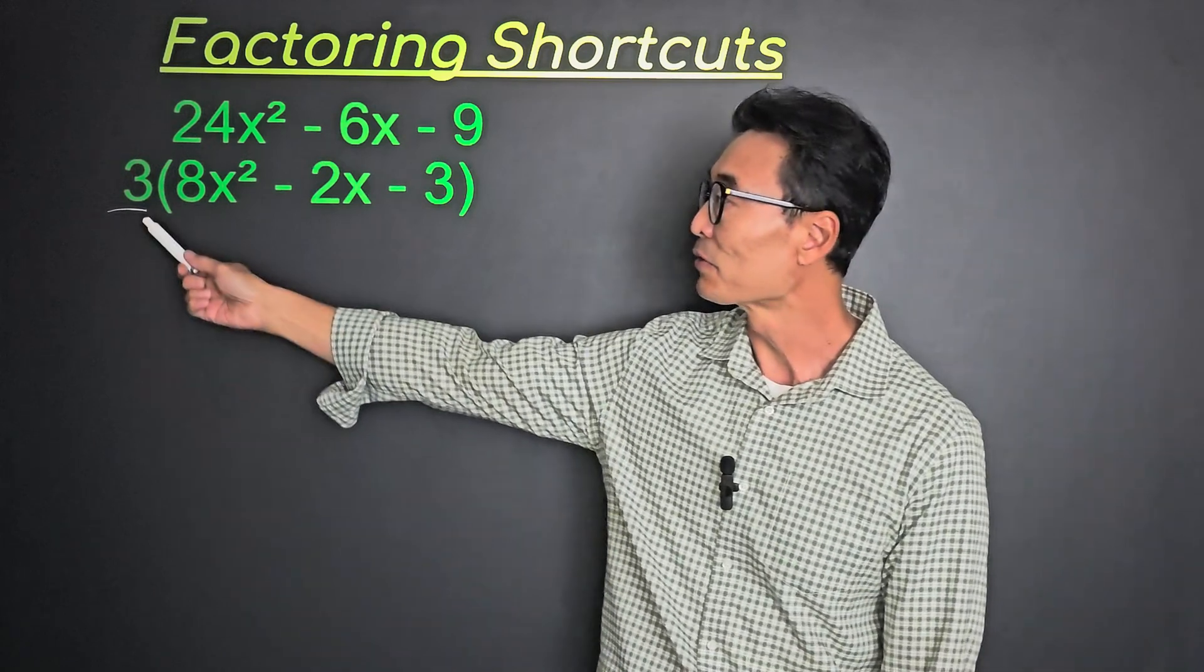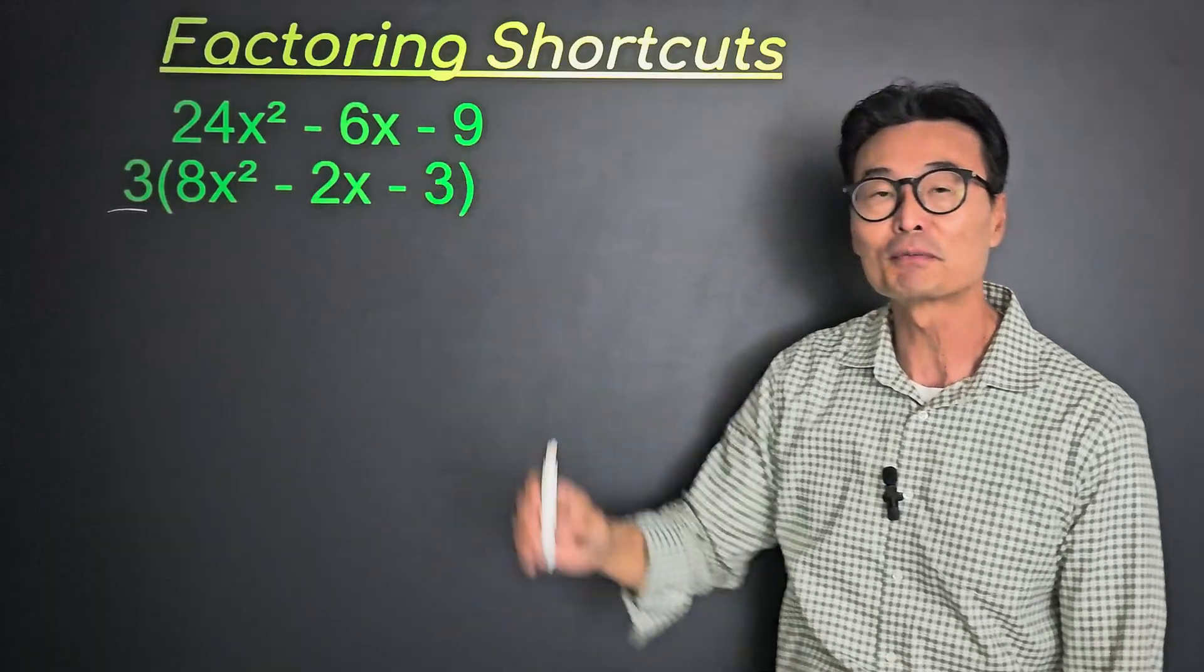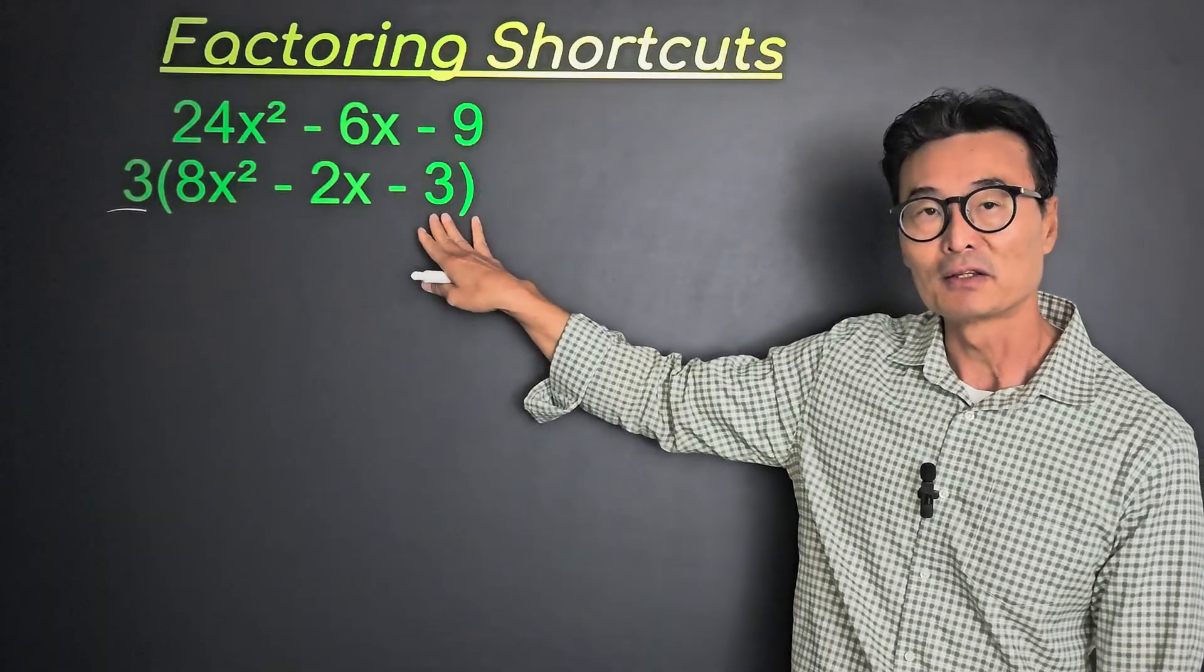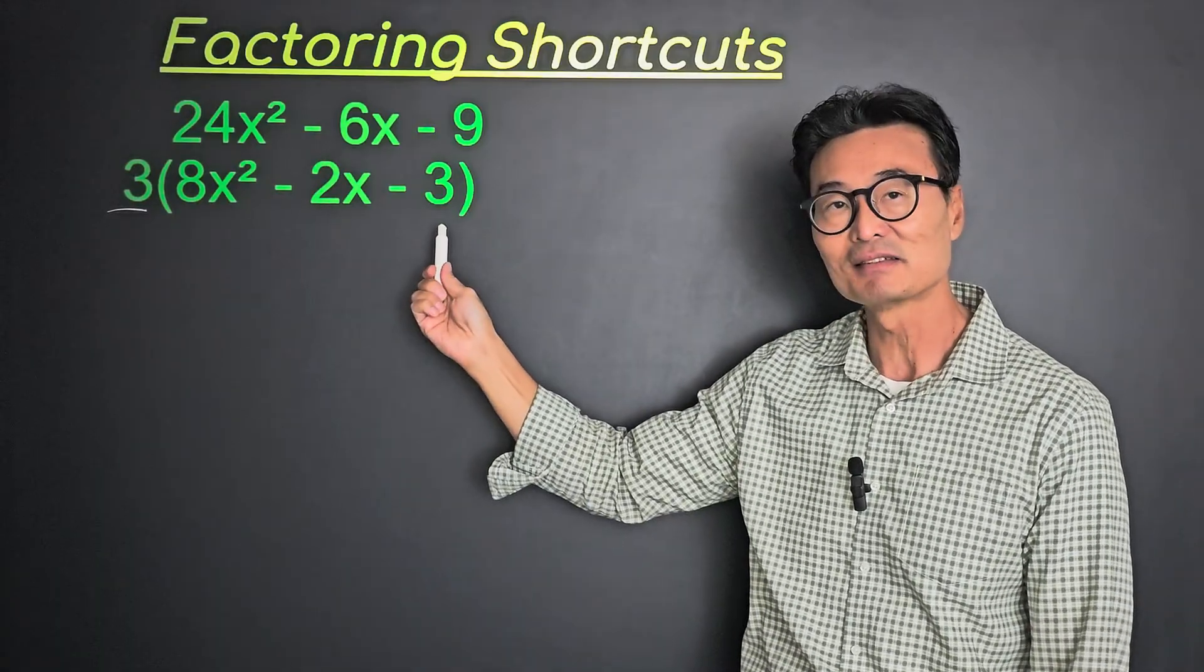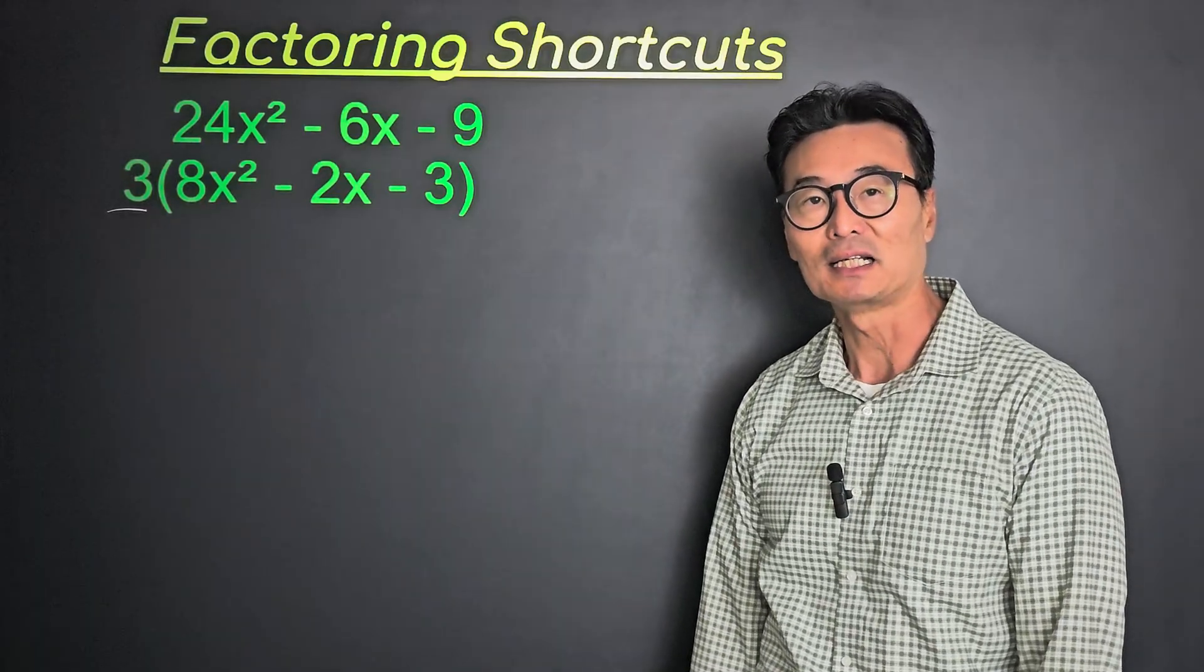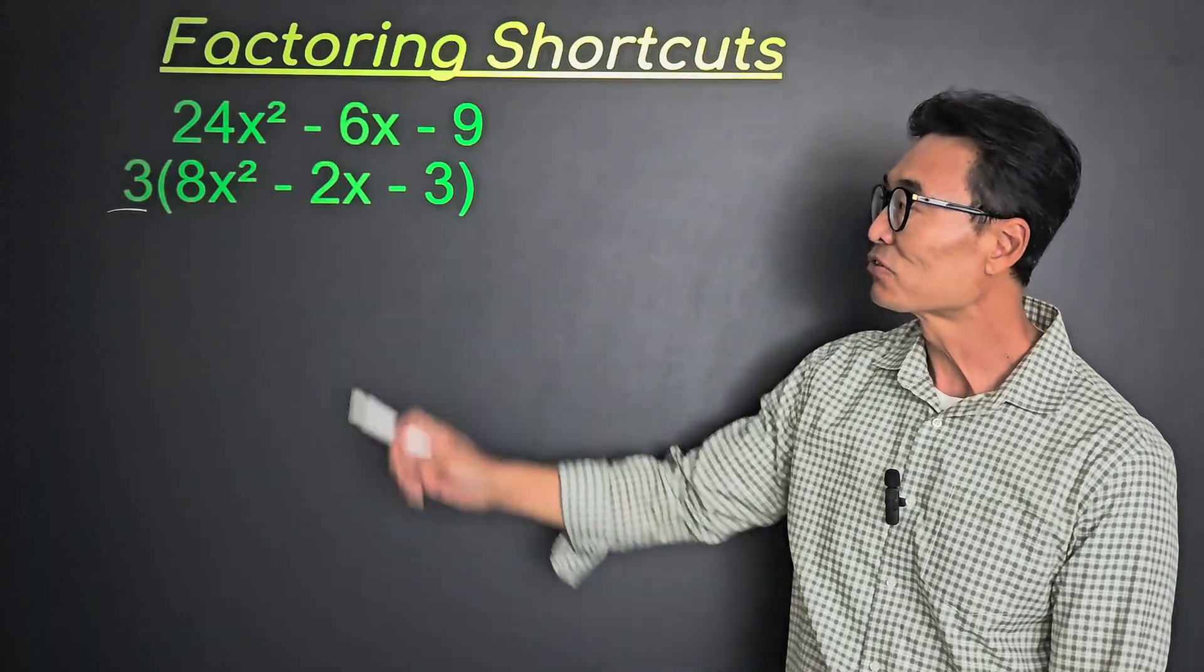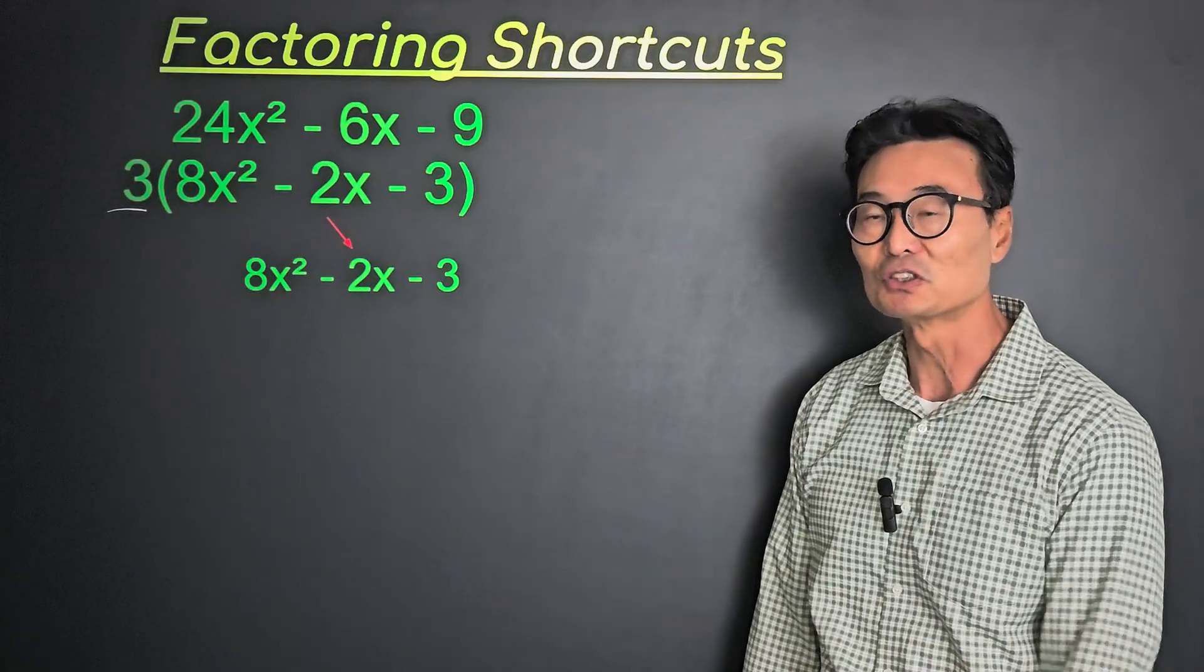In this case, if we factor out a 3 from the 24, we end up with 8, and then factor out a 3 from 6, we get a 2, and factor out a 3 from 9, we end up with a 3. So what we want to do is factor what's in the parentheses, and then pack on the 3 in the front at the end. Let's begin. So we'll take that 8x² - 2x - 3 and factor out the same way that we just did.